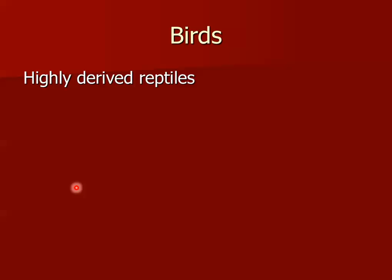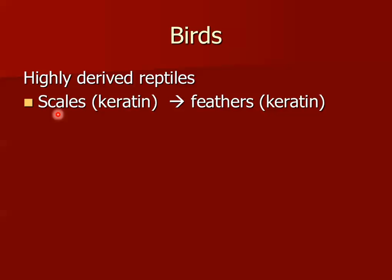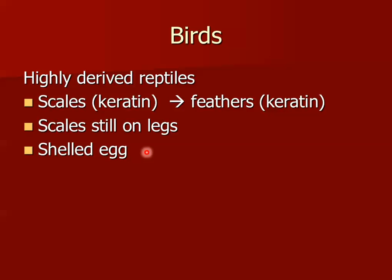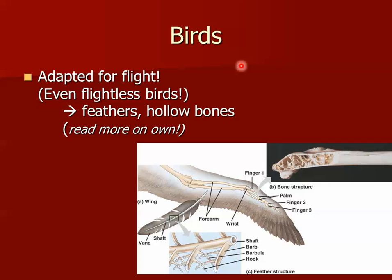Back to characteristics of birds: they're highly derived reptiles, and you can see evidence of their reptilian heritage. Their feathers are made out of keratin, and you can see under a microscope that they're really just modified scales, just like the scales reptiles have on their legs. They have the shelled egg, the amniotic egg, just like reptiles. And the key thing about birds is they are adapted for flight — even flightless birds are adapted for flight. An obvious adaptation is feathers; another is hollow bones with a honeycomb lattice, which are very lightweight.